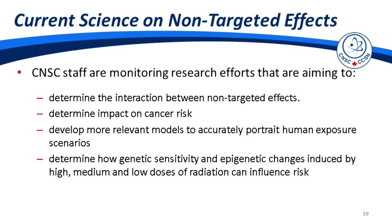With the discovery of bystander effects and genomic instability largely occurring in 1992, much work has been done to define these non-targeted effects. Current research efforts aim to determine how different types of non-targeted effects interact, whether they increase or decrease cancer risk, develop more relevant in vivo and 3D tissue models to portray human exposure scenarios, and determine how genetic sensitivity and epigenetic changes induced by high, medium, and low doses of radiation influence risk.